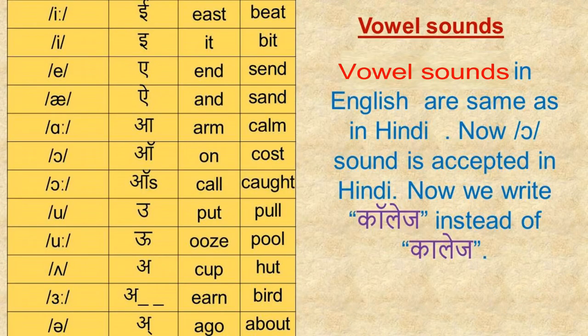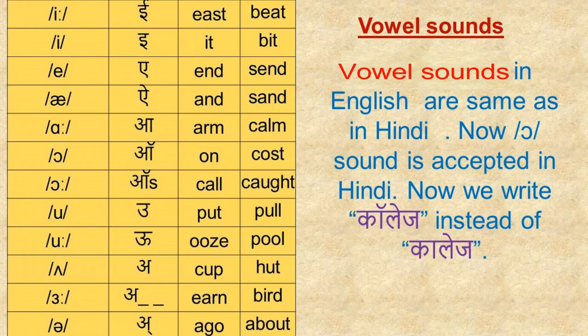Now, friends, we will learn about vowel sounds. As mentioned earlier, there are 20 vowel sounds, but of those 20, there are only 12 pure vowel sounds. Pure vowel sounds means they are not a combination of two vowel sounds — they produce a single vowel sound. Let's read these words aloud.